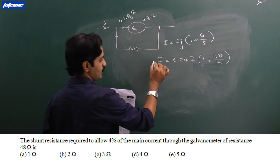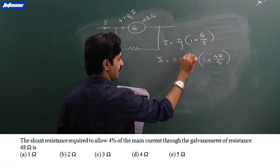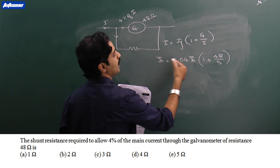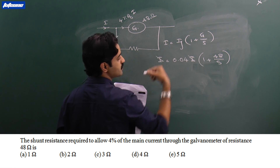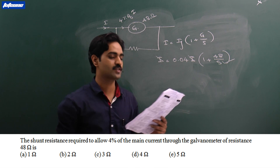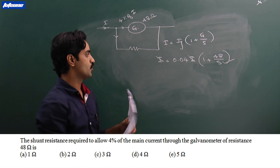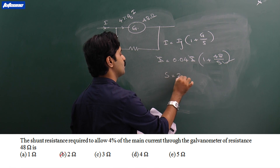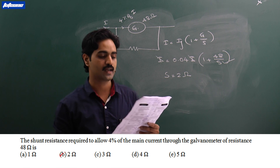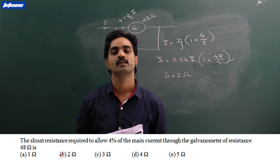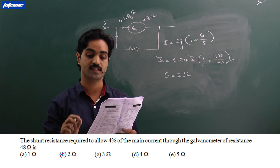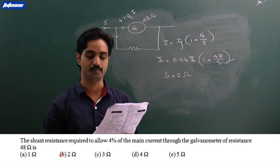We can cancel i and i, then solve this equation to find the shunt resistance. After calculation, you will get S equal to 2 ohms. So the correct option for question number 14 is B, answer: 2 ohms.